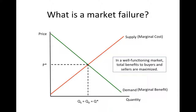Buyers' benefits, or consumers' surplus, equals the difference between what they are willing to pay and what they have to pay, which is the area below the demand curve and above the market price. Sellers' benefits, or producers' surplus, equals the difference between sellers' costs and the price for which they sell their product, which is the area above the supply curve and below the market price.